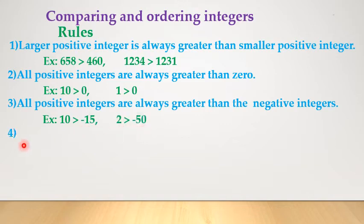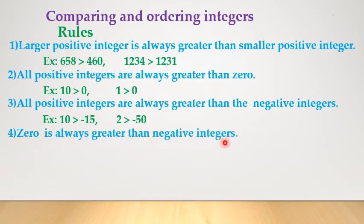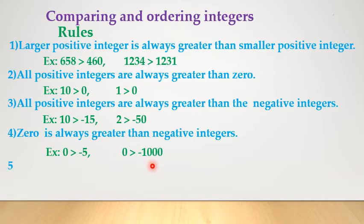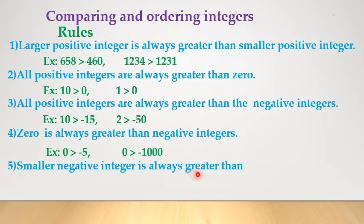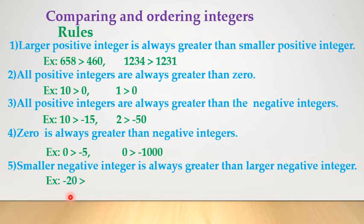Rule 4: 0 is always greater than negative integers. For example, 0 is greater than minus 5, and 0 is greater than minus 1000. Rule 5: a smaller negative integer is always greater than a larger negative integer. For example, minus 20 is greater than minus 50, and minus 10 is greater than minus 100.